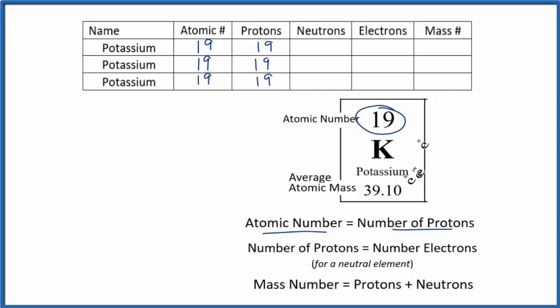When we look at the periodic table, we have K here. And that K, just because it's written as a K, is a neutral element. If it had a plus after it, that would be considered an ion, not a neutral element. But as written on the periodic table, this is a neutral element. And with a neutral element, the number of protons and electrons will be equal. So the electrons will be 19 as well.